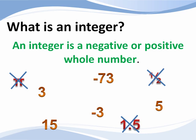As a general rule, any number that does not have a sign in front of it is a positive number. So we can assume that 3, 5, and 15 are all examples of positive numbers.